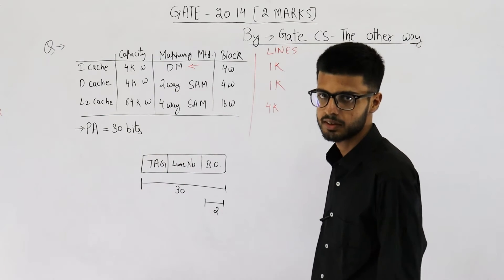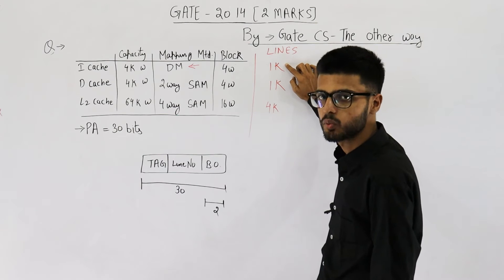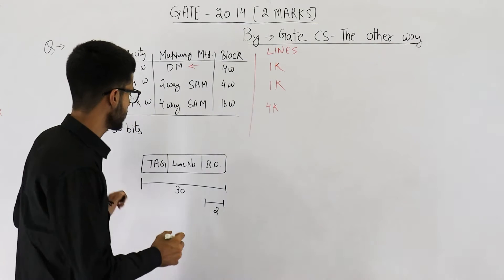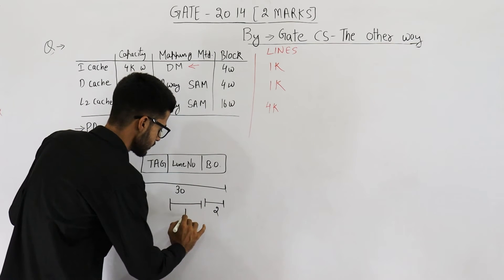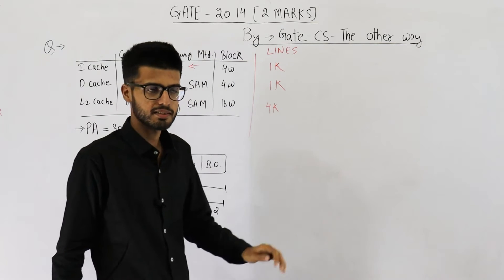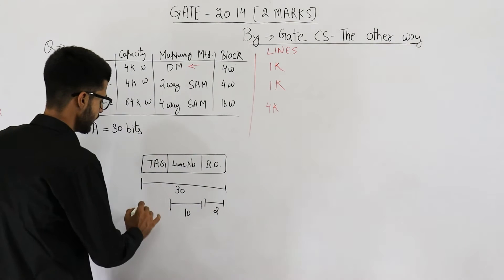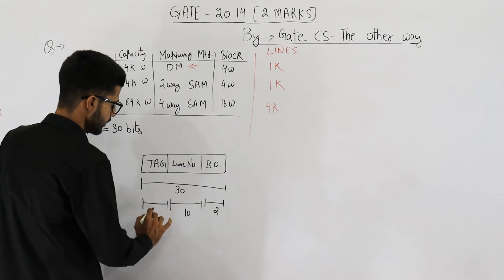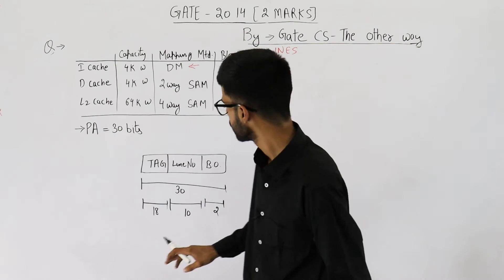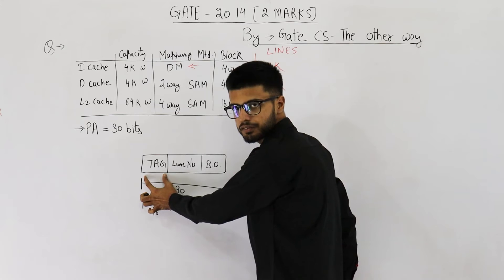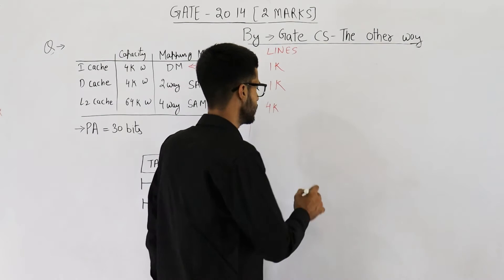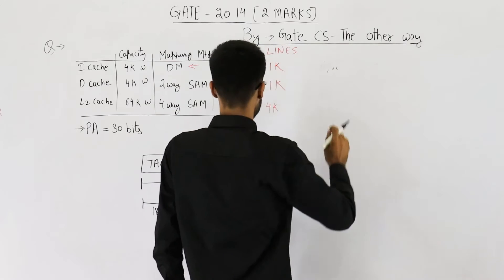The line number field identifies one of the total lines in cache. The I-cache has 1K lines = 2 raised to the power 10, so you need 10 bits for the line number. The tag field size = 30 minus 12 = 18 bits. So there are 18 bits in the tag field and 1K lines in the cache.